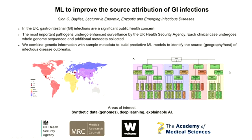We can build these hierarchical models where we have information about different continents where these diseases may have arisen, then the sub-regions within those continents, and then countries within those continents. We're building this for a range of different gastrointestinal pathogens, looking at how we can use not just machine learning approaches, but explainable AI approaches, and how we can integrate these models more effectively with what the outputs are needed by end users, such as epidemiologists and disease management in public health.